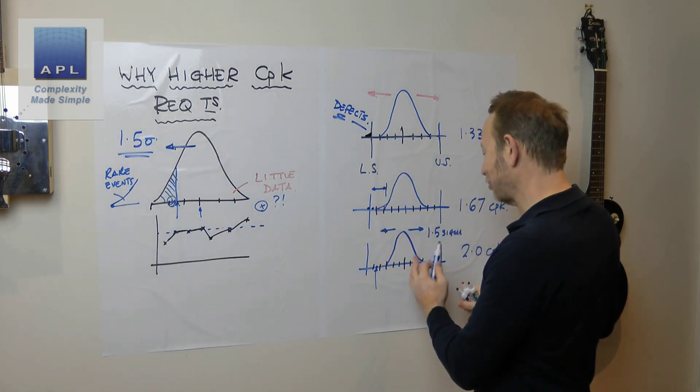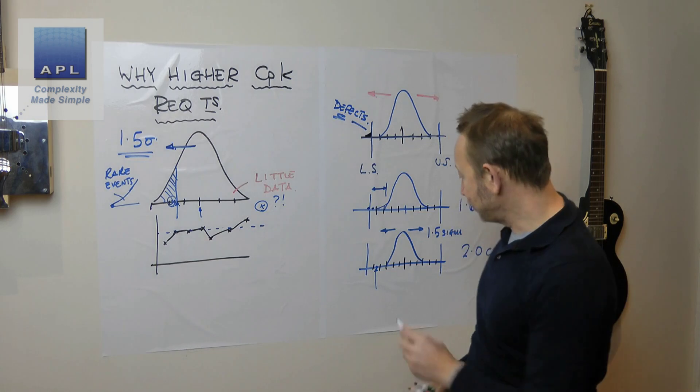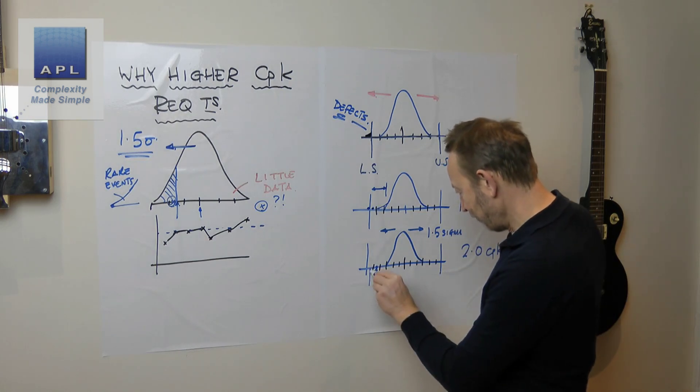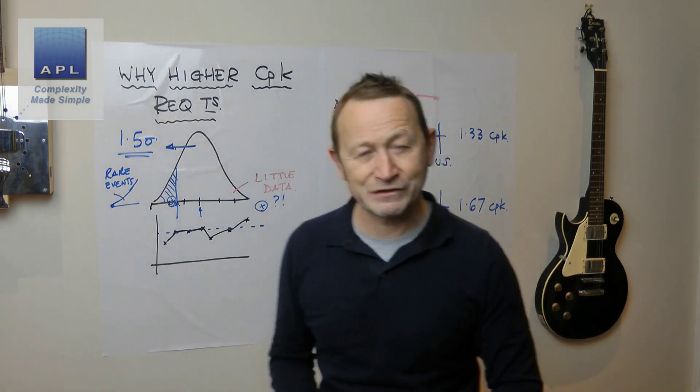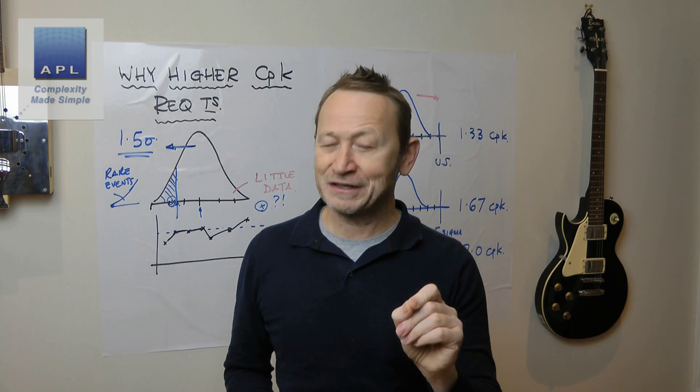We're pretty much guaranteeing that if this thing moves, and if it moved further over here where it's still not going to be producing defects, if it moves all the way 2.5 sigma, we're definitely going to see that.